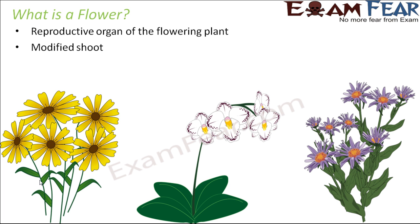A flower is nothing but a modified shoot. Many of you might have felt that a flower is a different thing, but actually a flower is nothing but a part of the shoot which has been modified to form a flower. Like you have roots which grow below the ground and shoots which grow above the ground — flowers are always present either on the terminal end of a shoot or on branches coming out from the shoot.